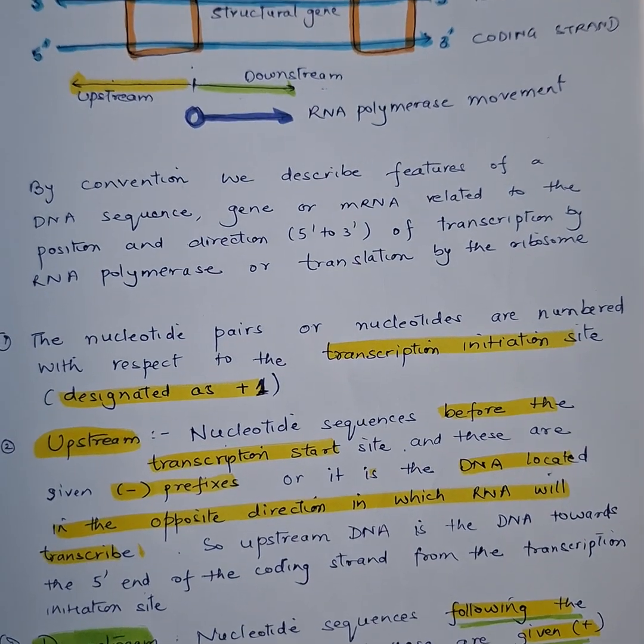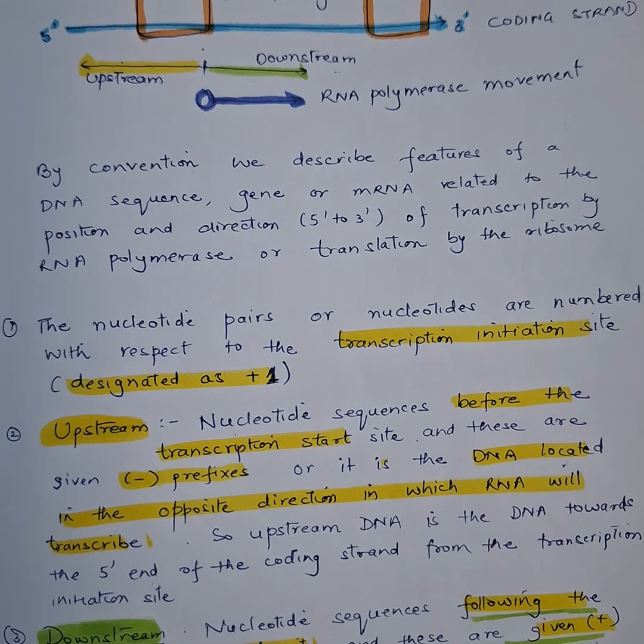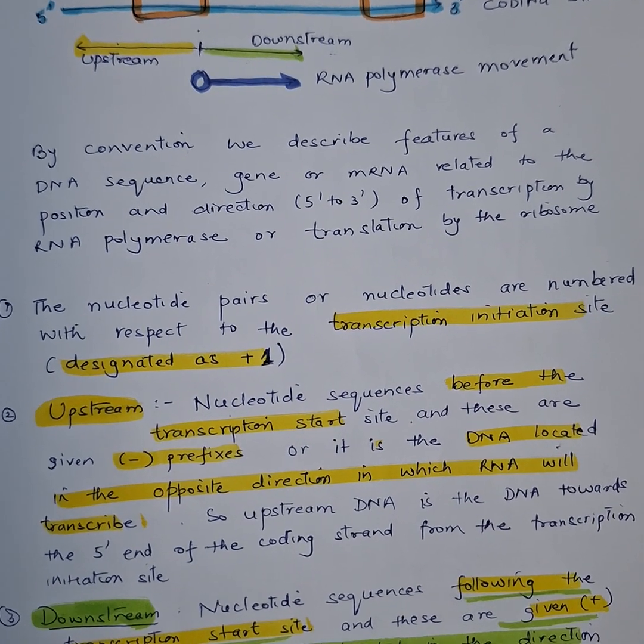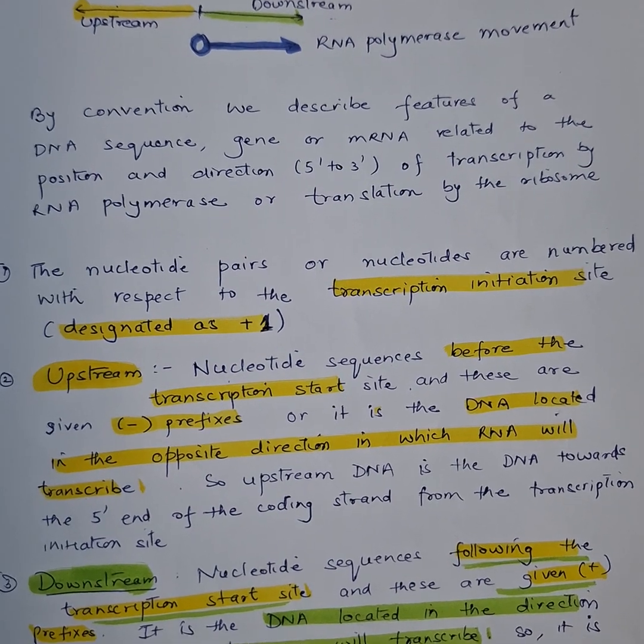It is the nucleotide sequence before the transcription start site and is given the prefix minus. It is the DNA located in the opposite direction in which RNA will transcribe. So upstream DNA is the DNA towards the 5 prime end of the coding strand.